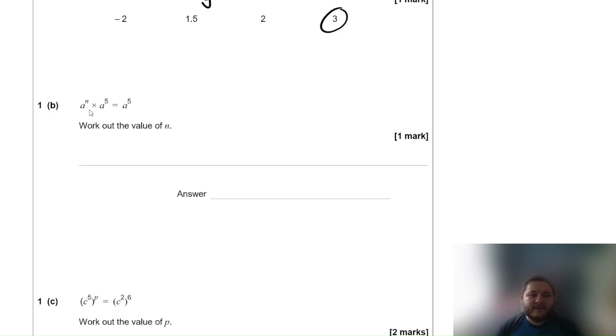Work out the value of n. A to the power of n times a to the power of 5 is equal to a to the power of 5. Well when you multiply two base numbers raised to a power you add the powers. So n plus 5 is equal to 5, so n is equal to 0.